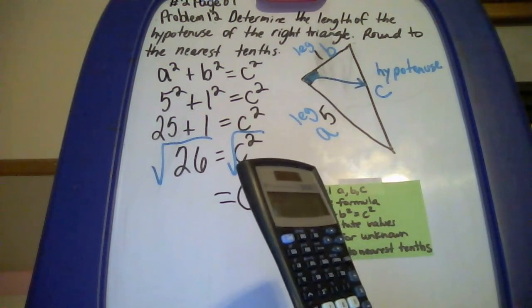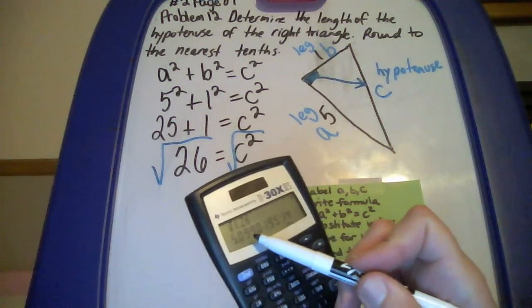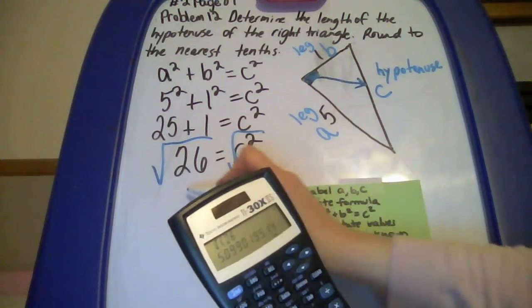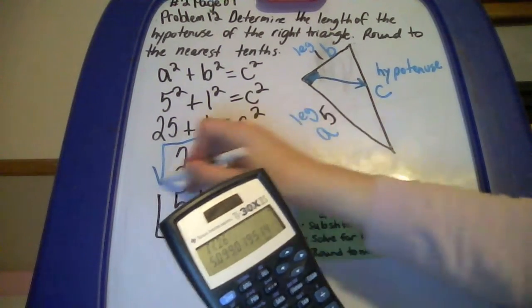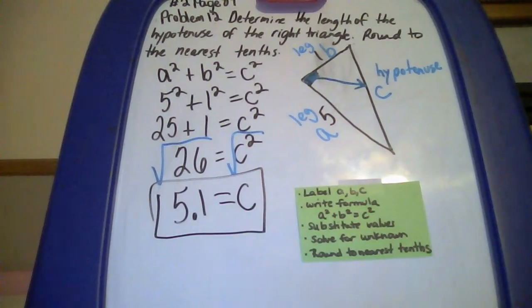If you're rounding to the nearest tenth, that 0 is going to go up because of the 9. So it's going to be 5.1. So my answer for the length of the hypotenuse is 5.1.